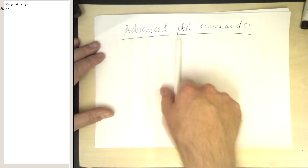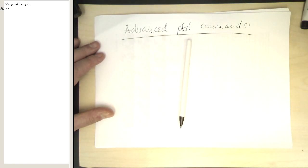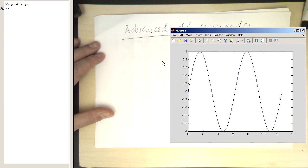So let's do some advanced plot commands. Remember we have got our sine wave here. So imagine we just would like to plot this part here, from zero to pi, and would like to also limit the axis from zero to one. So how do we do that?